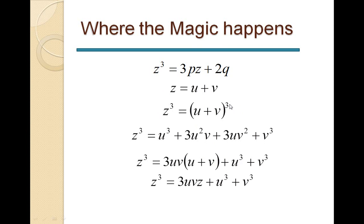Factoring out 3uv from the middle terms gives 3uv(u+v), and since Z = u+v, we can write Z³ = 3uv·Z + u³ + v³. This is a very useful form. Now we have Z³ on both left-hand sides and can compare our original equation Z³ = 3pZ + 2q with this result, suggesting we set uv = p and u³ + v³ = 2q.